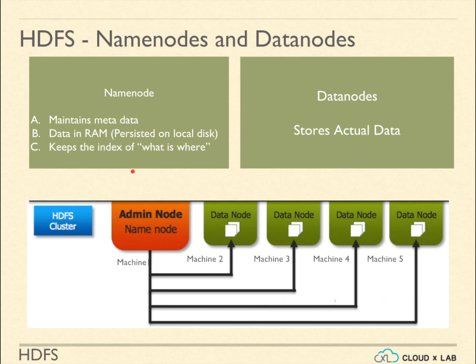Please note that we can also have a data node on the machine where the name node service is running. By default, name node metadata service runs on port 8020. The name node manages the file system namespace. It maintains the file system tree and the metadata for all the files and directories in the tree. This information is stored in the RAM and persisted on the local disk in the form of two files: the namespace image and the edit log. The name node also knows the data node on which all the blocks for a given file are located.